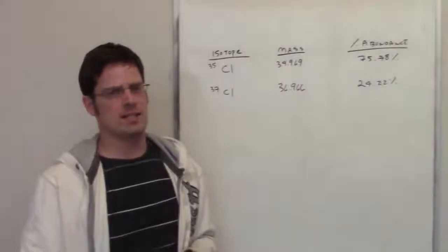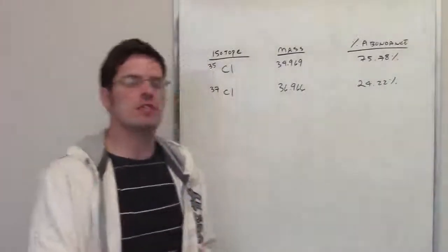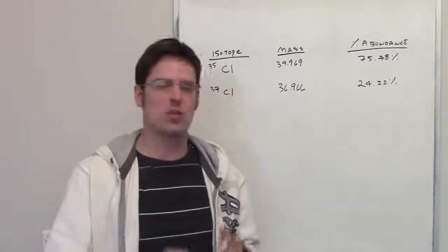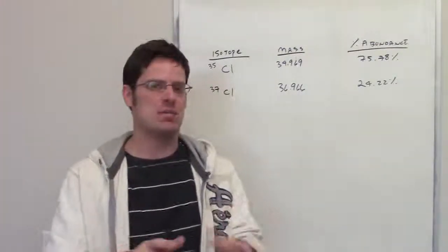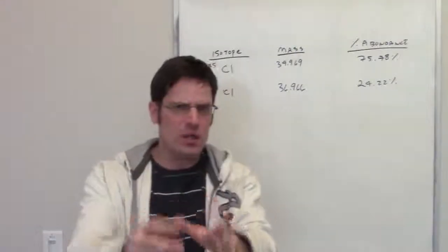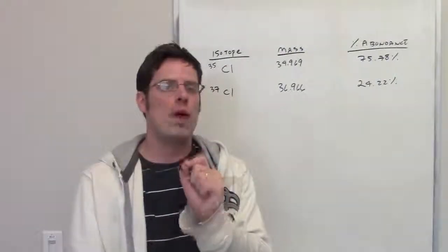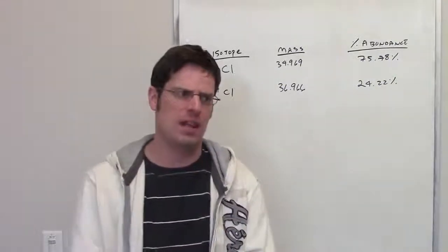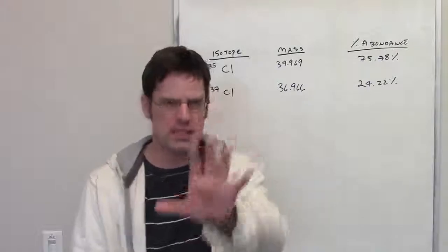When you look at the periodic table, the masses that are given for the different elements in their little respective boxes are not actually the real masses of any given atom of that element on Earth. What those masses are in the little boxes on the periodic table are weighted averages of all of the various isotopes of that element. That might sound confusing. Please let me explain.